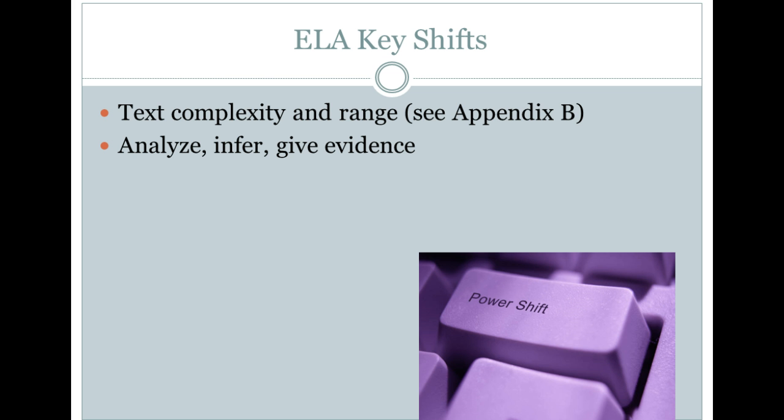Another key shift is writing to sources. We are using a great writing curricular tool called Explorations in Nonfiction Writing, with Linda Hoyt as the main author — it's K–5. It is very aligned to Common Core and very teacher friendly. It comes with mentor texts that are informational; lower grades get a big book of informational texts, and upper grades get a smaller set of passages as mentor texts. It's broken into sections by the Common Core State Standards. It's pretty reasonable if you're looking for something to teach writing in a Common Core way.